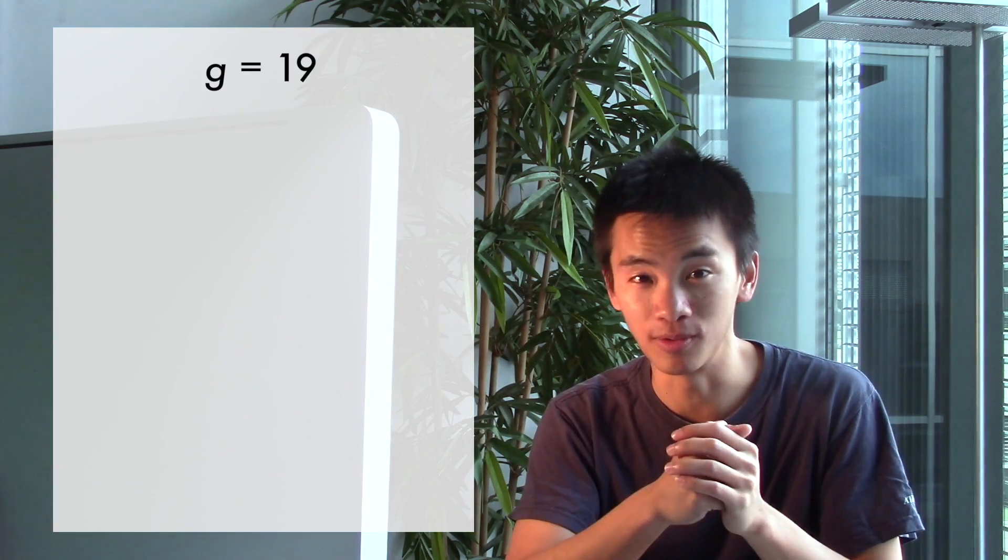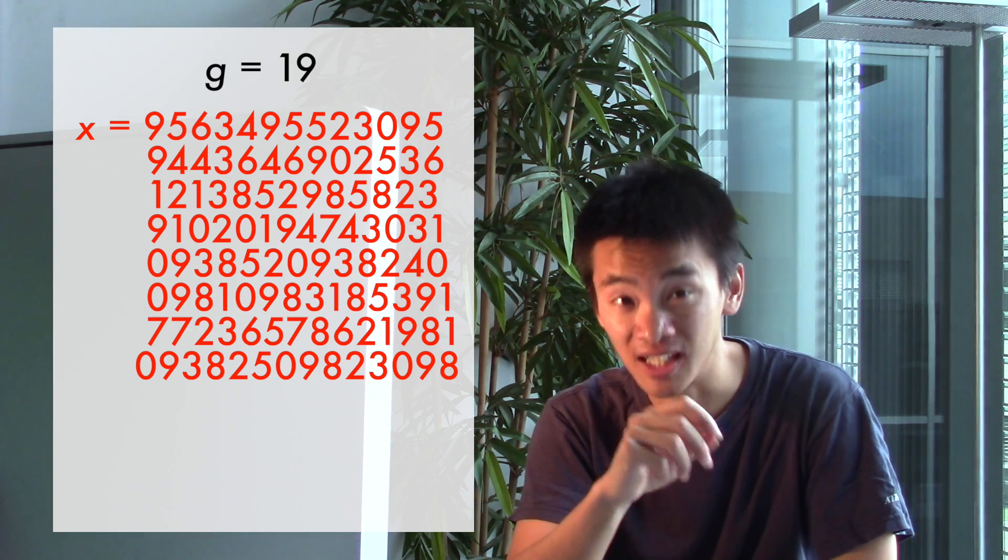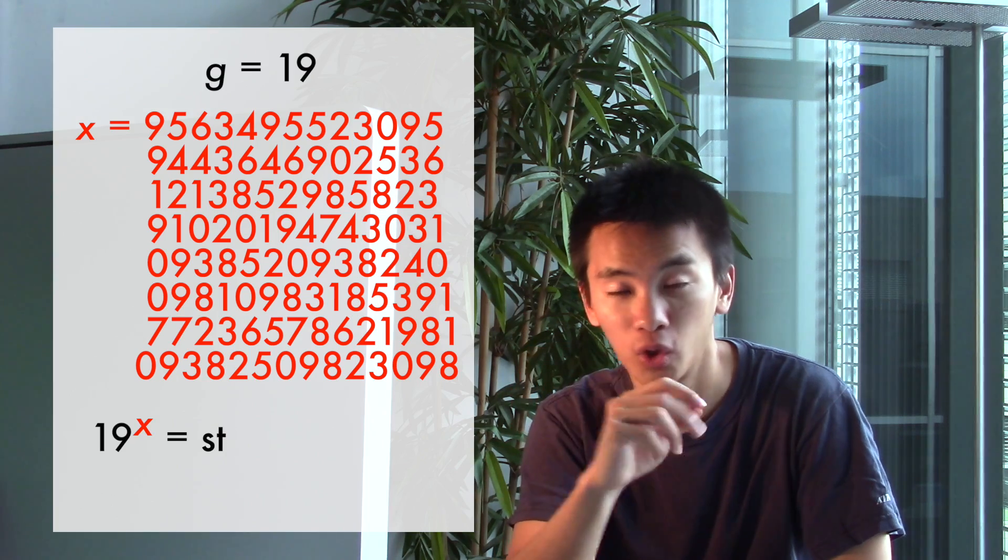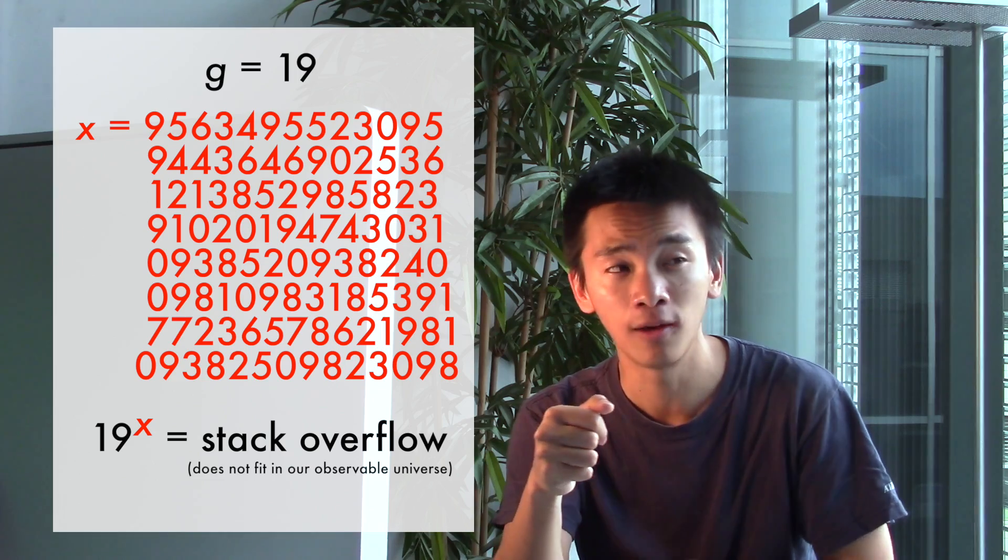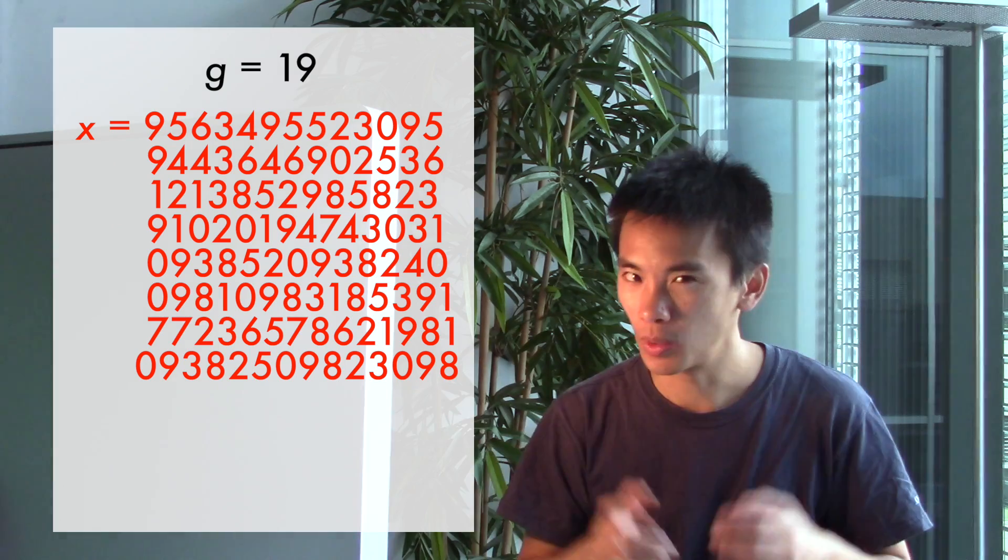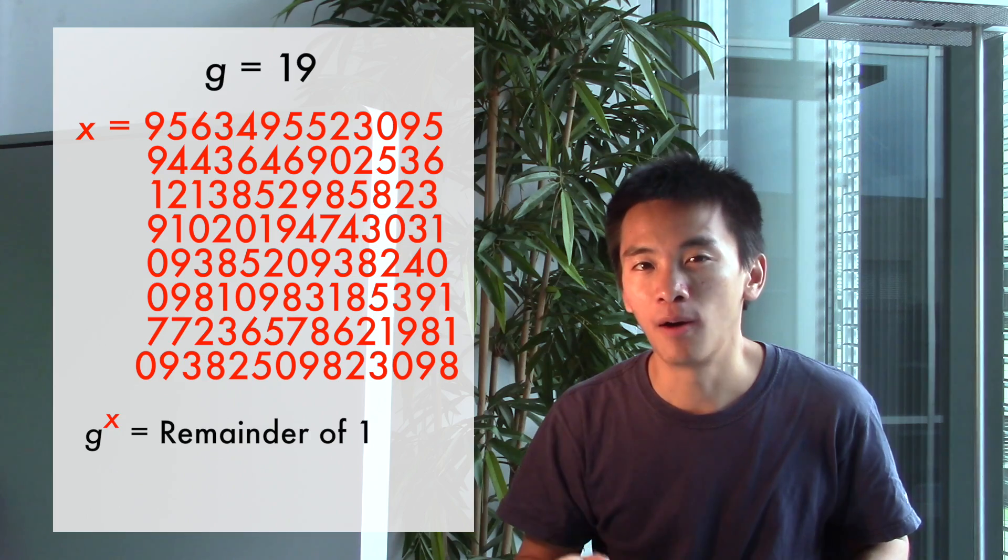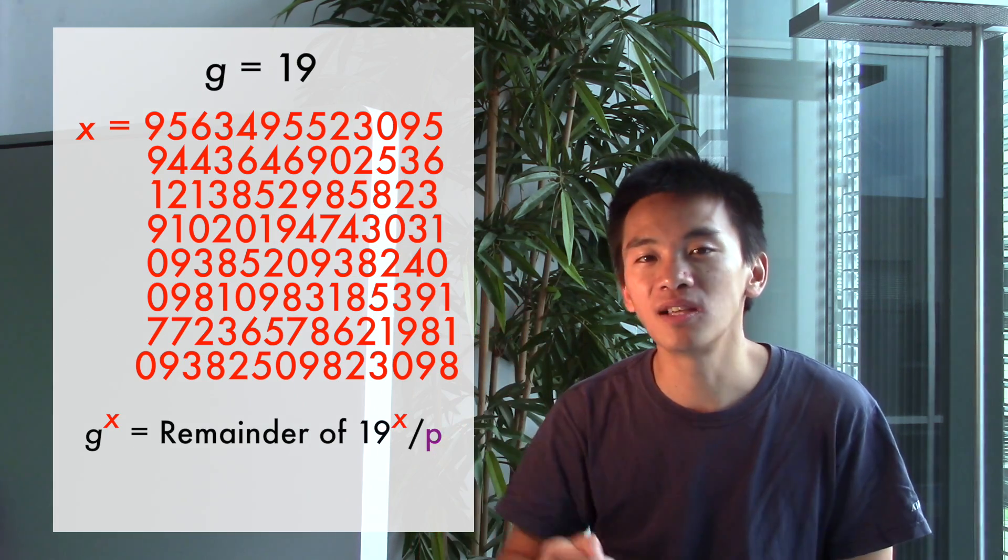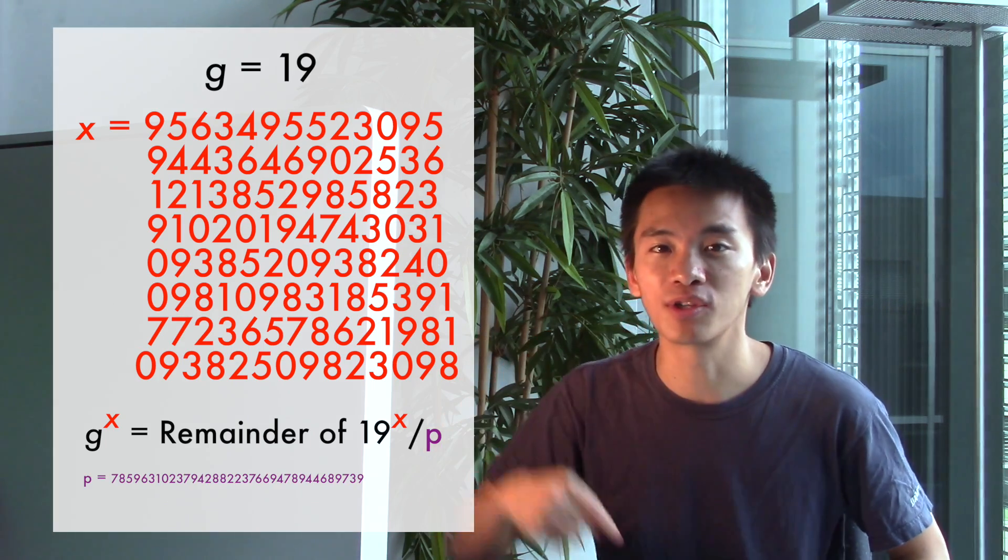It's probably a good moment now to tell you what G really is in practice. G can actually be the number 19. However, G to the power X cannot really be 19 to the power X because this would be a huge, huge, huge number if X is a few hundred digits long. In fact, it would be a number so huge that it wouldn't fit in our entire universe. What we can do is to compute the remainder of the Euclidean division of 19 to the power X